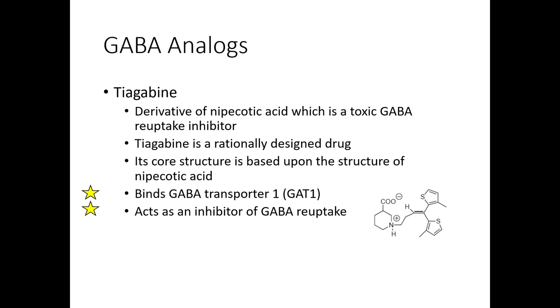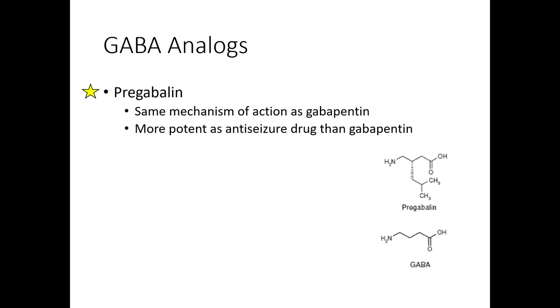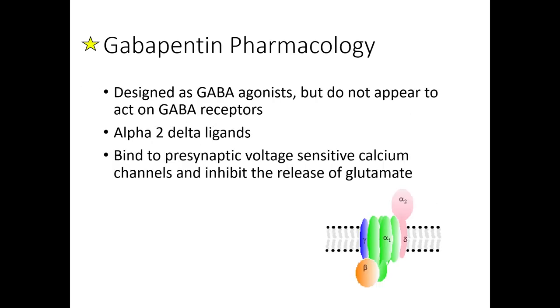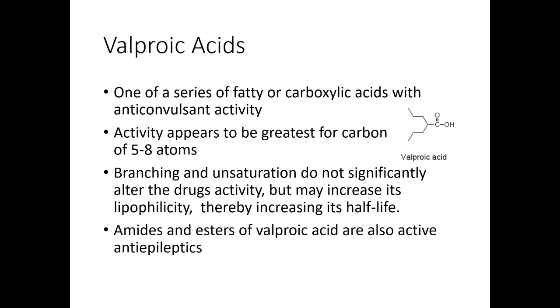The fourth GABA analog is tiagabine. Tiagabine binds to the GABA transporter — specifically the GAT-1 reuptake transporter — acting as an inhibitor of reuptake. So tiagabine is a reuptake inhibitor. A memory trick: the 'T' in tiagabine matches the 'T' in transporter. The other GABA analogs don't start with T, so that mnemonic works in this one case.